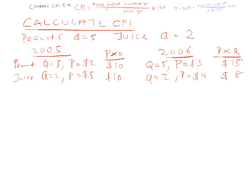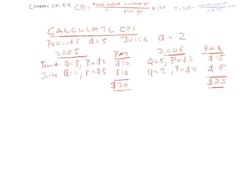So the total value of the fixed basket of the CPI in 2005 is $20, and for 2006 it is $23. So we have this information.